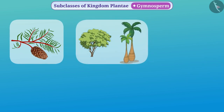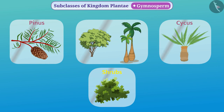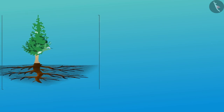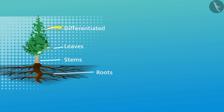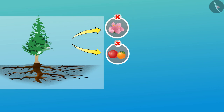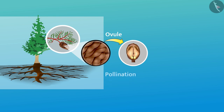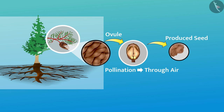Gymnosperms include medium or tall trees and shrubs such as Pinus and Cycas. These plants are perennial and woody. The body is fully developed and differentiated into different parts like root, stem, and leaves, but they lack flowers and fruits. The lack of flowers and fruits makes them different from angiosperms. Since gymnosperms do not have flowers, ovules are in the open state and pollination is mainly through air. The seeds produced after fertilization are also in an open state.